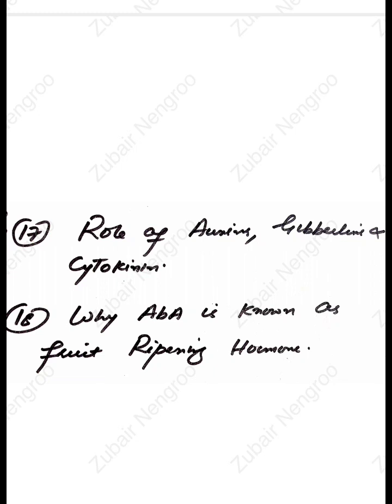The last question is: why is abscisic acid known as the fruit ripening hormone? So this was all about the guest paper for botany, BG fourth semester students. Thank you for your cooperation.